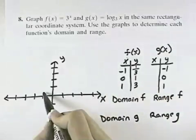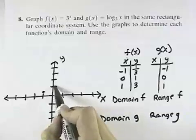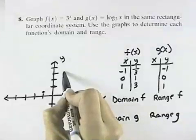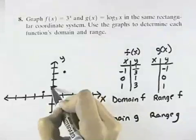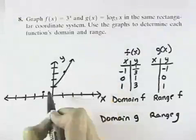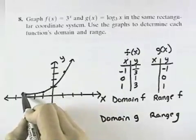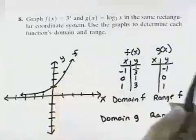I have the points (-1, 1/3), (0, 1), and (1, 3), which tells me this exponential function goes up to the right and approaches the x-axis as a horizontal asymptote to the left. That would be my function f.